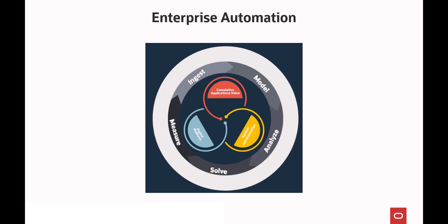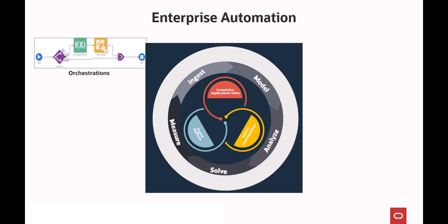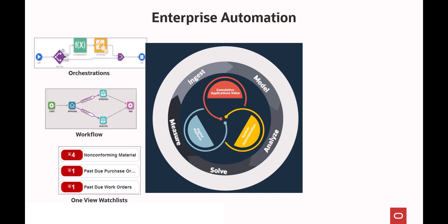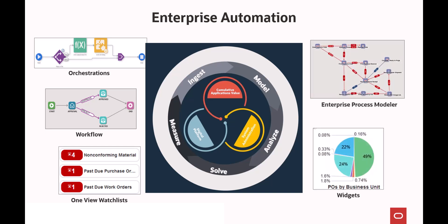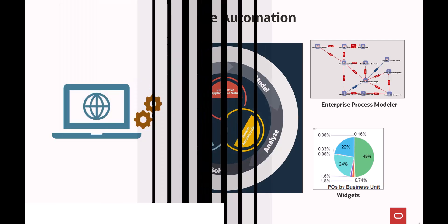The Enterprise 1 product features that comprise the Enterprise automation framework include some that have been around for a while: Orchestrator, Workflow, OneView Watchlists, UX1 Analytics, Enterprise 1 pages, as well as some more recent innovations such as Enterprise Process Modeler and widgets. We can employ them all with the aim of getting better data into the Enterprise 1 system and getting better insights out of it.